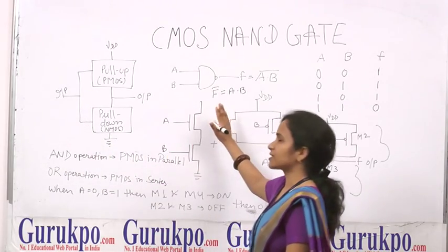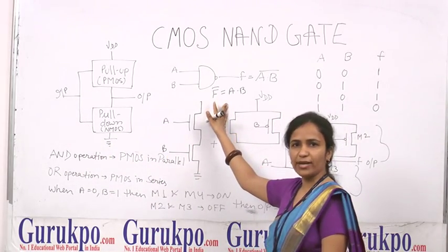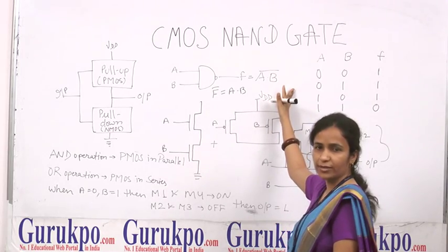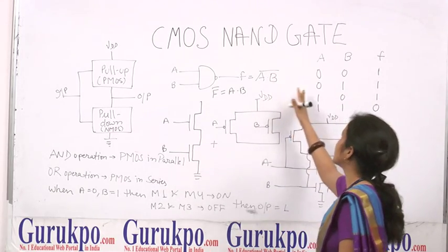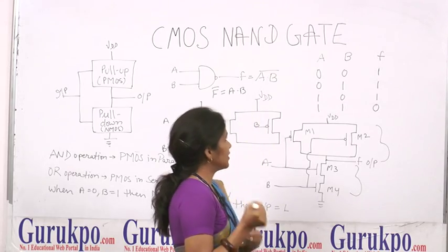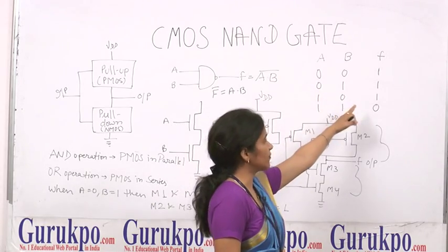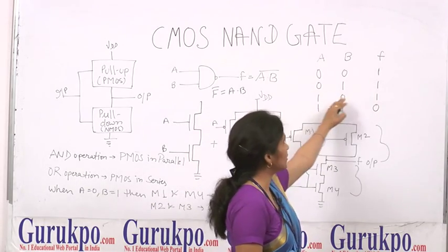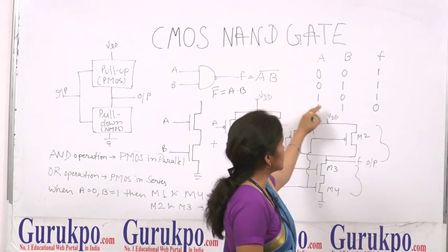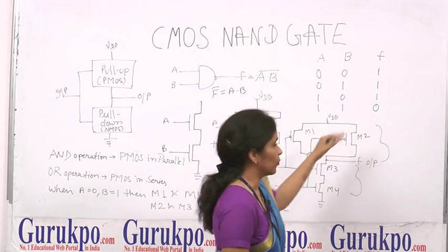Here we are going to discuss about the NAND gate. This is the digital symbol of the NAND gate and this is the equation of the NAND gate. This is the truth table of the NAND gate. We take four input combinations: 0, 0 gives output 1; 0, 1 gives output 1; 1, 0 gives output 1; and 1, 1 gives output 0.